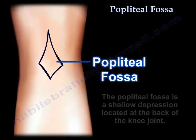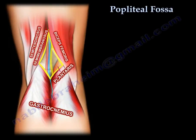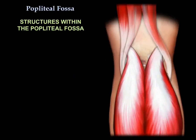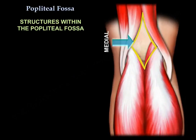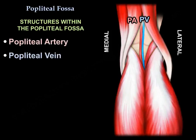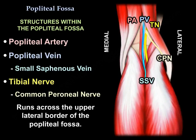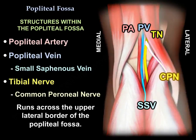The popliteal fossa is a shallow depression located at the back of the knee joint. Structures within the popliteal fossa from medial to lateral are: the popliteal artery, the popliteal vein, and the small saphenous vein. The tibial nerve is also present, and the common peroneal nerve runs across the upper lateral border of the fossa.